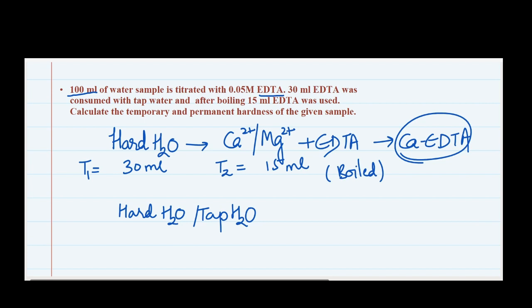After boiling, you have removed the temporary hardness — whatever is left is permanent hardness. That's why the second reading is lower than the first. So obviously there will be two cases. Case one: find out the total hardness of the water sample by equating the hard water with the EDTA reading, using the 30 ml reading.